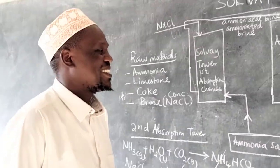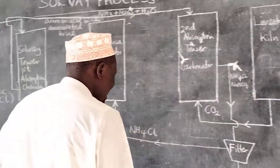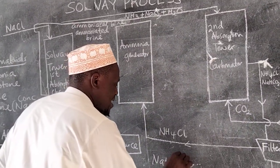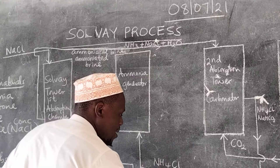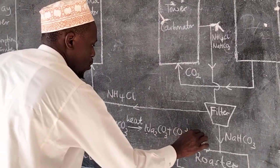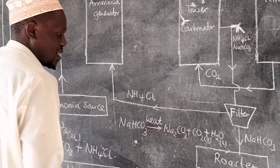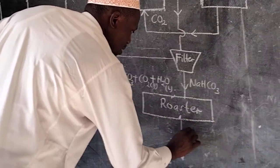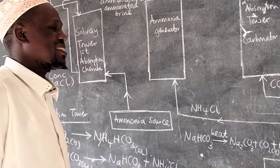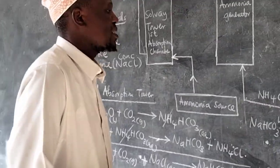At the roaster, sodium hydrogen carbonate is heated. The action of heat on sodium hydrogen carbonate gives sodium carbonate, plus carbon dioxide, plus water. This sodium carbonate is the product required from the Solvay process. It will then go for grinding, storage, and packing, ready for sale.